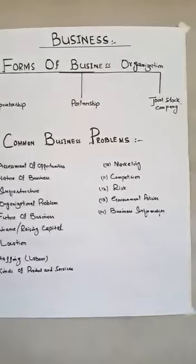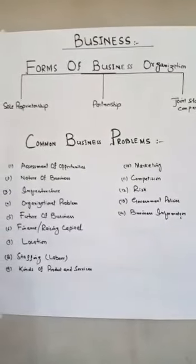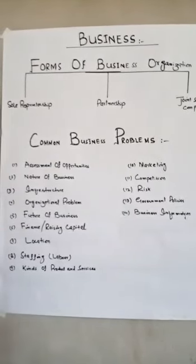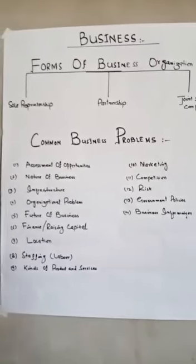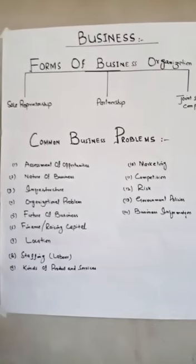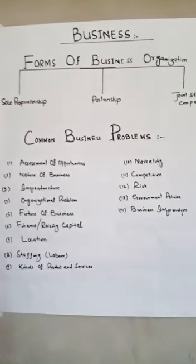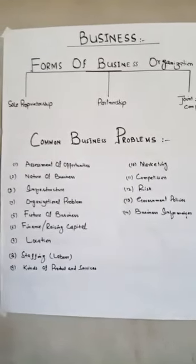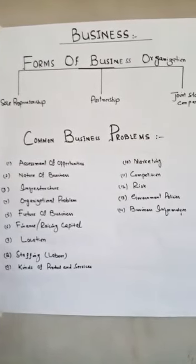Number three is joint stock company. A joint stock company is a legal entity which must be registered under the Companies Ordinance 1984. It is run by the board of directors, and its management is separate in the sense that the board of directors and shareholders are distinct. Every shareholder has voting power to elect the board of directors. The company may be divided on the basis of kinds by incorporation, kinds by shares, and kinds by liabilities.